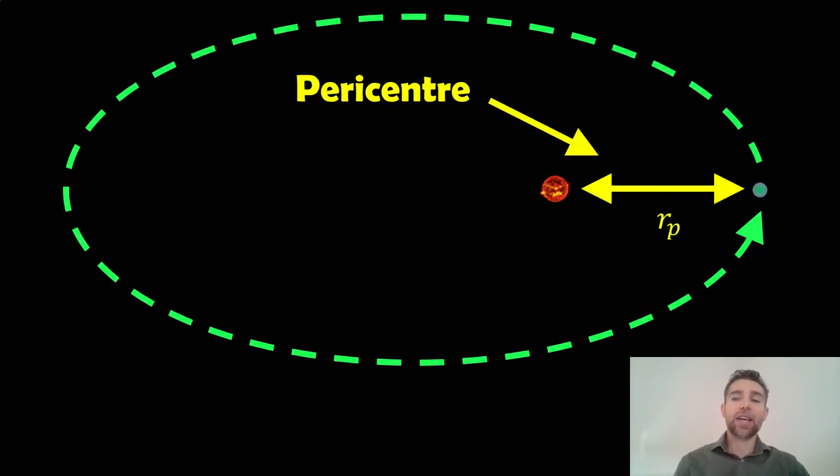So before we do that, let's revisit some other parameters or information about orbits in general. This here is the pericentre of an elliptical orbit. Now the pericentre is the shortest distance between two objects on its orbit. So here we've got an elliptical orbit. I'm using the example of a planet and a star. So the pericentre is when they get closest to each other.